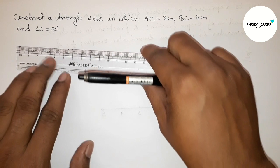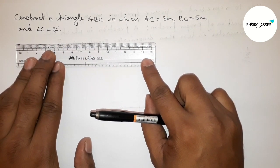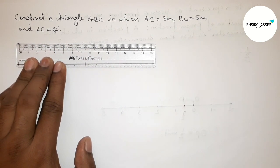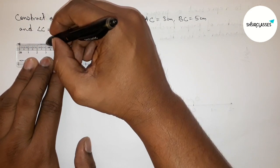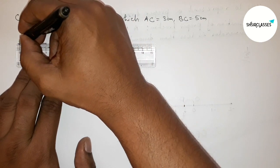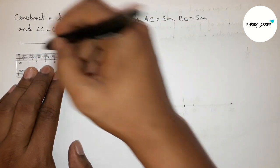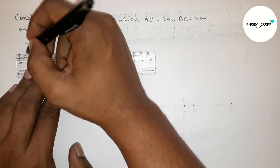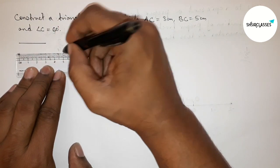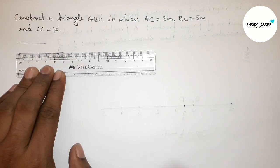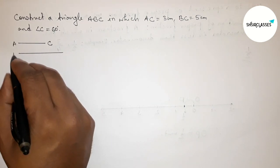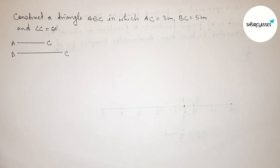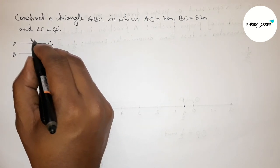First of all, let us draw the given two sides. First, drawing 3 centimeters — this is starting zero and this is the 3 centimeter line. Then drawing another line 5 centimeters starting from zero — this is 5 centimeters. So this one is the AC line and this one is BC: AC is 3 centimeters and BC is 5 centimeters.